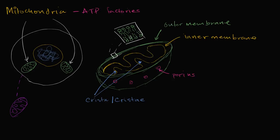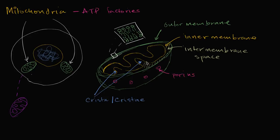Inside the inner membrane, between the outer membrane and the inner membrane, is a space called the intermembrane space. Because of the porins, the small molecule concentration in the intermembrane space and outside the mitochondria in the cytosol are going to be similar. But the inner membrane does not have porins, so you can have a different concentration on either side — and that is essential for the electron transport chain. The electron transport chain culminates with a hydrogen ion gradient being built between the two sides, and they flow down that gradient through a protein called ATP synthase, which helps synthesize ATP.